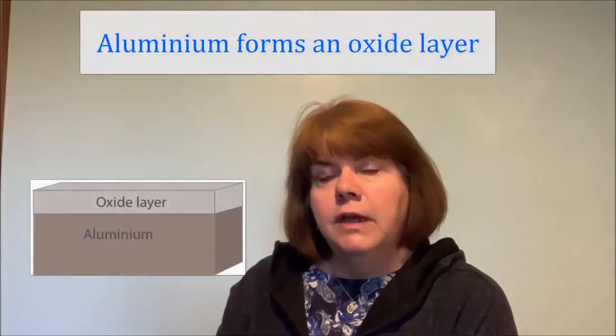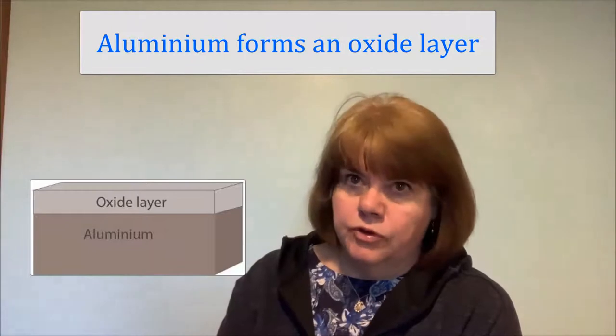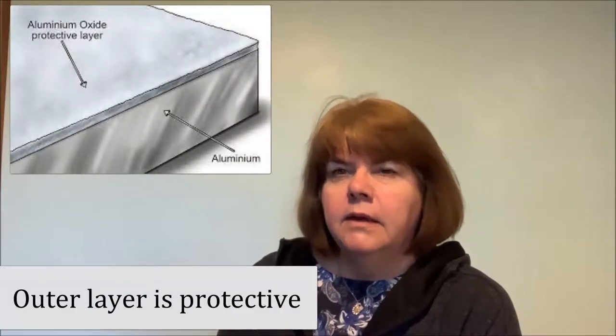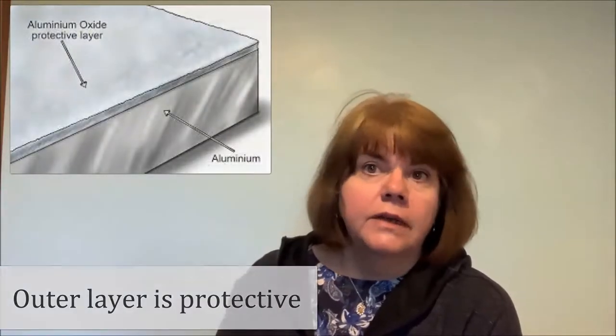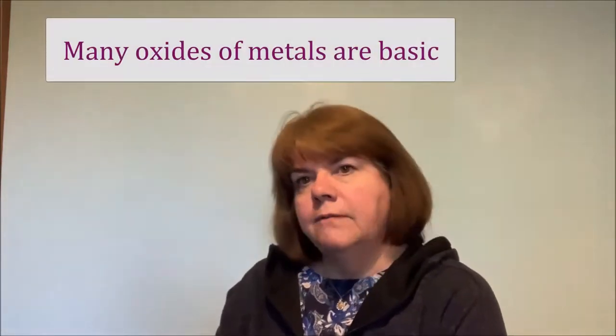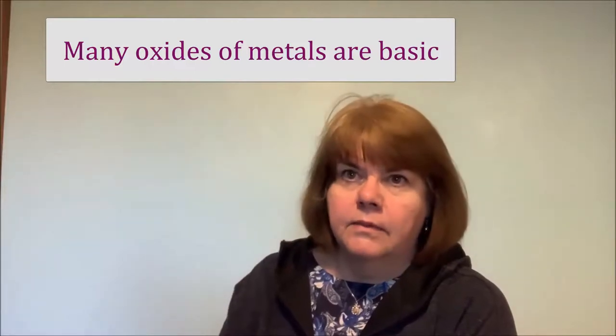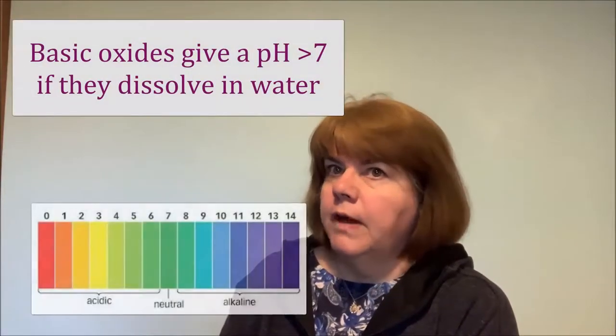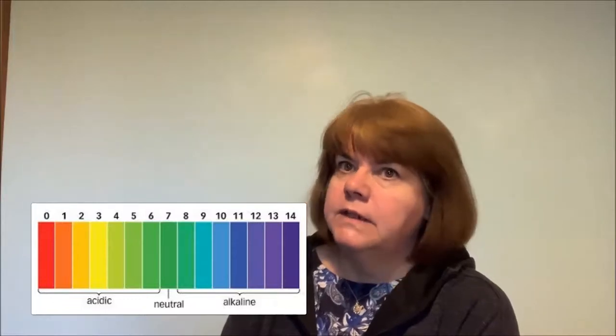Sometimes, when aluminium reacts with oxygen, an oxide layer is produced. This reduces the shininess of the metal because it's no longer the pure metal, but the outer oxide layer can actually act as a protective layer. However, many oxides of metals are basic — in other words, they will give a pH of greater than 7 if they dissolve in water. A few metals produce what we call amphoteric oxides.